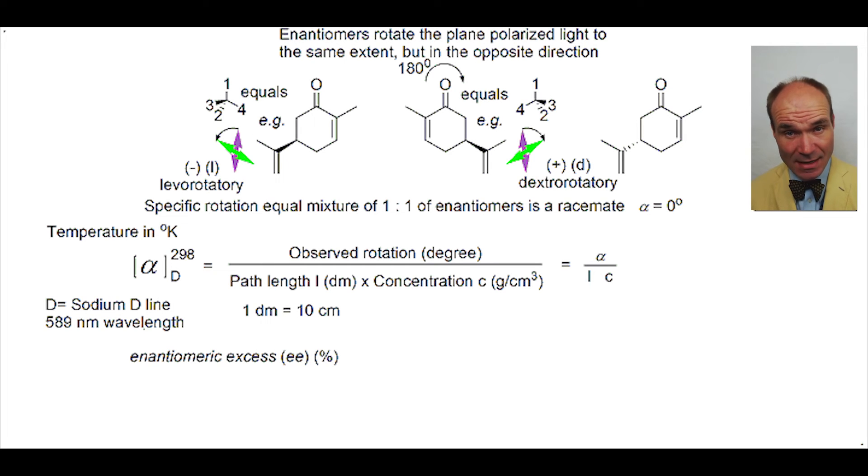Enantiomeric excess, or EE as a percentage, is a way to indicate the amount of one enantiomer relative to the other. One method is to measure the sample's observed alpha divided by the alpha max, or alpha value associated with the pure single enantiomer thought to dominate in the sample. This is all multiplied by 100.